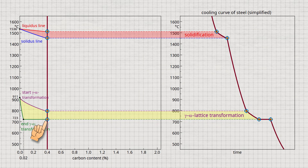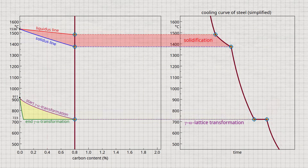From a carbon content of 0.8%, the start of the gamma-alpha transformation is even lower to such an extent that it again coincides with the end of the lattice transformation. This means that from a carbon concentration of 0.8%, the gamma-alpha transformation occurs at constant temperature.